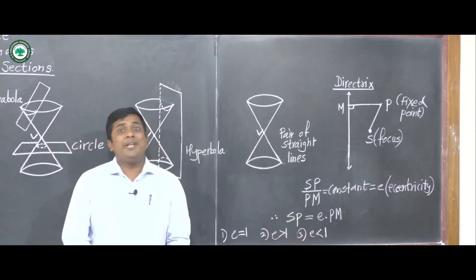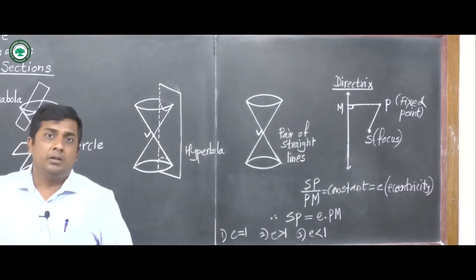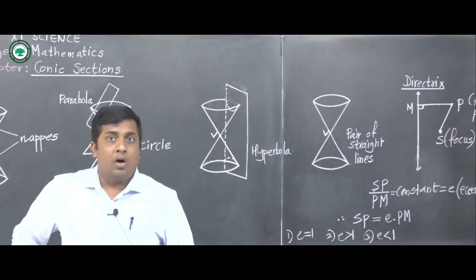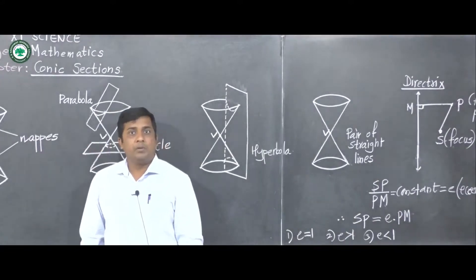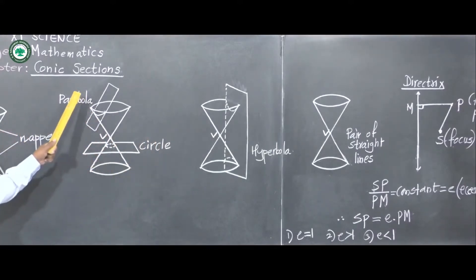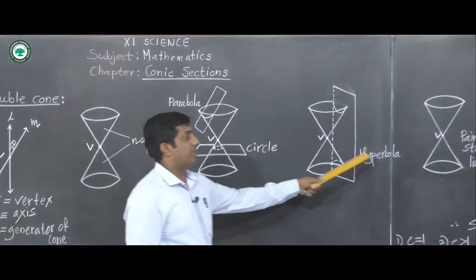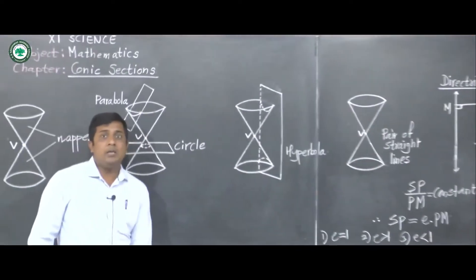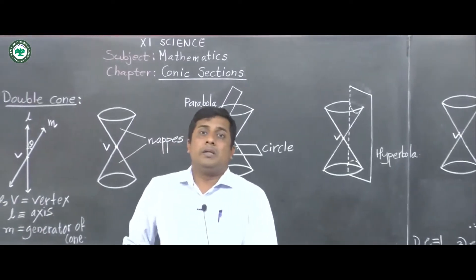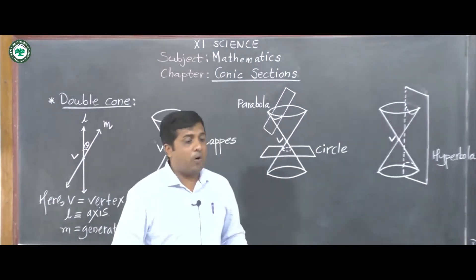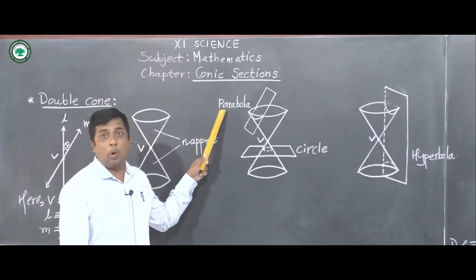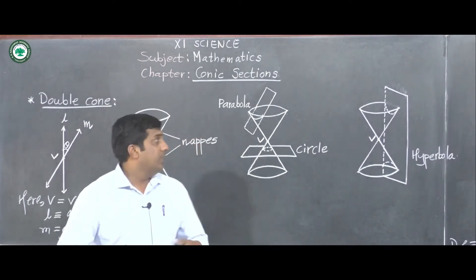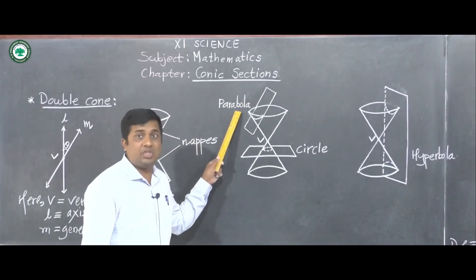In today's lecture we defined the conic sections — circle, parabola, hyperbola, and pair of straight lines — formed by intersecting a cone with a plane. In the next lecture we will move on to defining the equation of the parabola. Thank you.